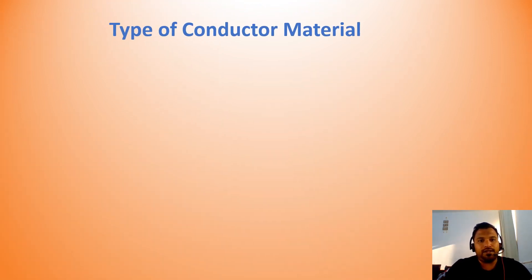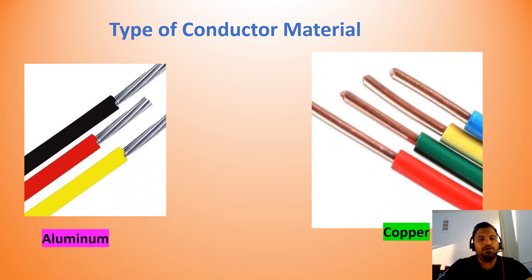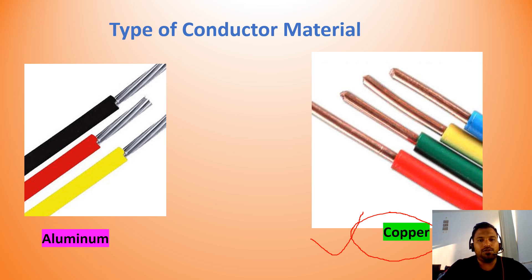While choosing wires, the first element you have to decide is the type of conductor material. In the market, aluminum and copper wire conductors are available. For household purpose, you want to choose copper, because copper has a high current-carrying capacity compared to aluminum. For long distances, you would choose aluminum wires, but for household purpose, it's better to choose copper.